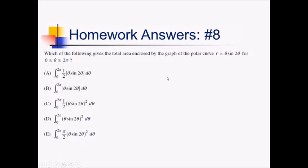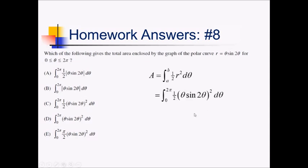On this problem, they want the area enclosed by r equals theta sine of 2 theta between 0 and 2 pi. Using our formula, integral from a to b of 1 half r squared d theta. The limits of integration are given as 0 to 2 pi, and the r they also gave us. So we have 1 half times theta sine 2 theta squared. We have that exact expression in choice C — so the answer is choice C.